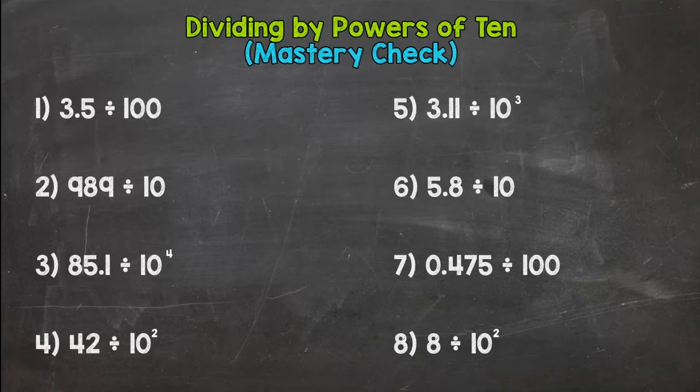So remember, dividing by powers of 10, all you need to do is move the decimal. You just need to make sure you move it the correct way. You are dividing, so you are lowering the value of those digits because you're dividing by a whole number greater than one. Okay, so go ahead and press pause.